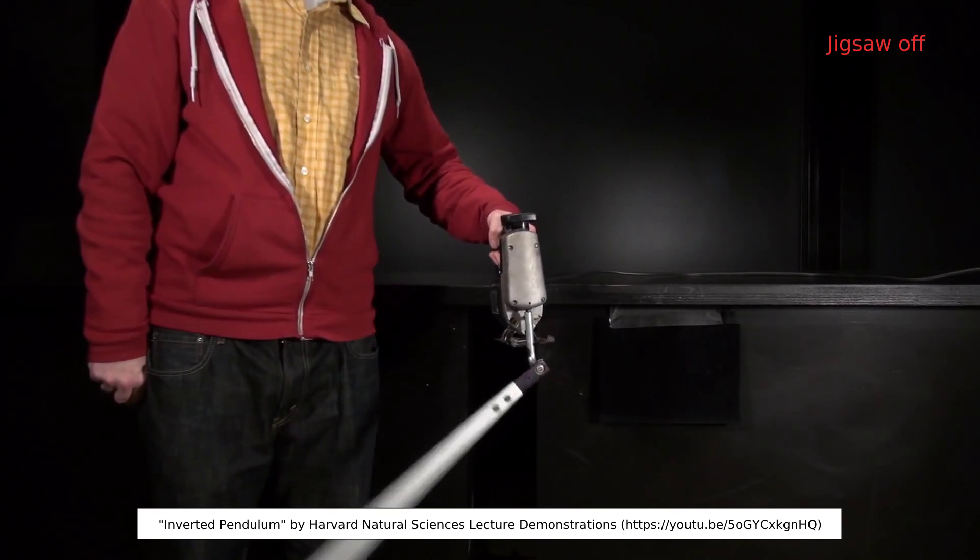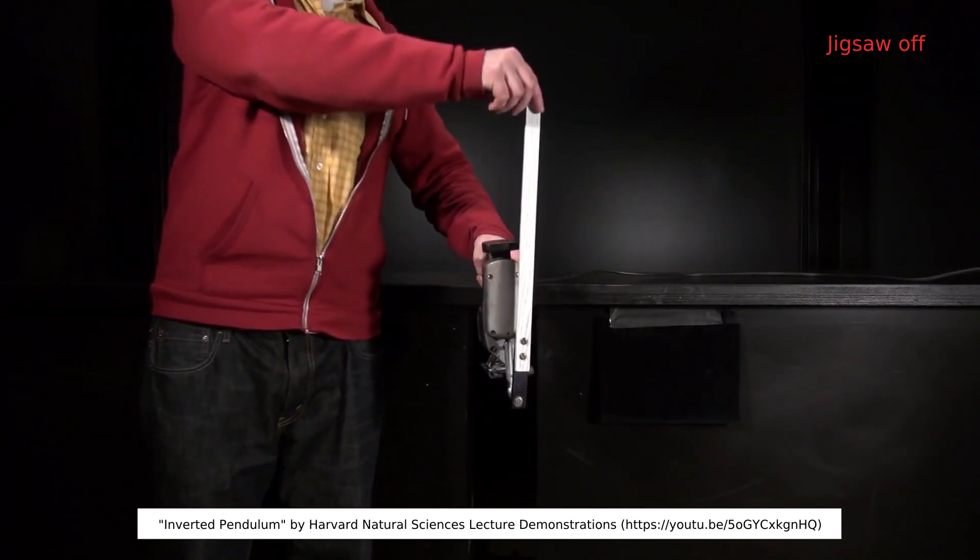If you take a pendulum and vibrate it up and down at just the right frequency, it can be stable in its inverted position.